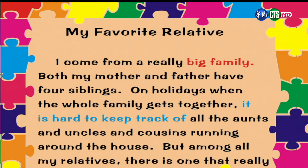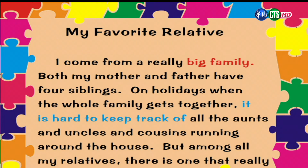Let's look at our writing model now — My Favorite Relative. 我最喜歡的親戚。I come from a really big family. Both my mother and father have four siblings. On holidays, when the whole family gets together, it is hard to keep track of all the aunts and uncles and cousins running around the house. 我來自一個大家庭，我爸爸跟我媽媽各自都有四個兄弟姐妹。每當大家齊聚一堂，要記住每一個阿姨、叔叔還有表親們的名字是件很困難的事。